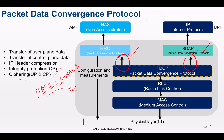Comparing LTE PDCP and NR PDCP, there are key differences. NR PDCP supports larger sequence numbers to accommodate increased data rates and longer packet sequences in 5G networks. Additionally, in NR, integrity protection can optionally be applied to DRBs (data radio bearers) — the user plane — in addition to SRBs (signaling radio bearers), which were the only ones protected in LTE. NR also supports the NR-DC (dual connectivity) scenario.